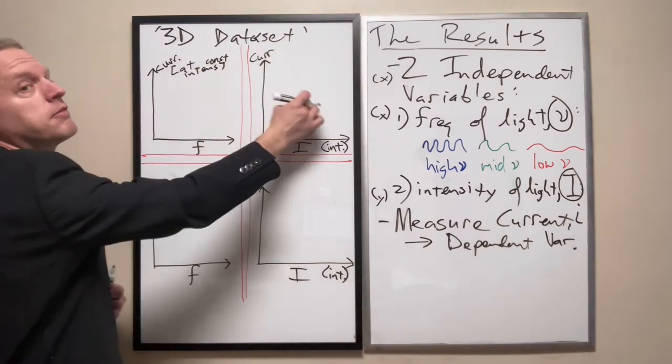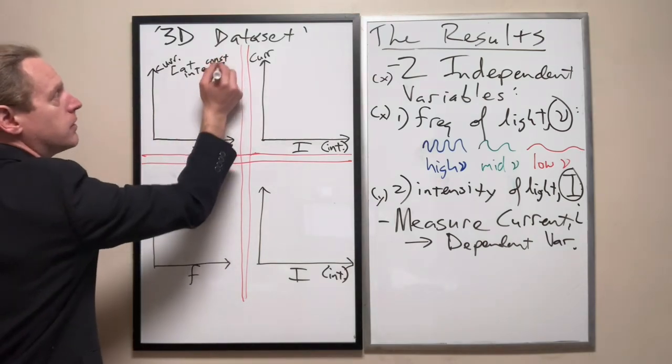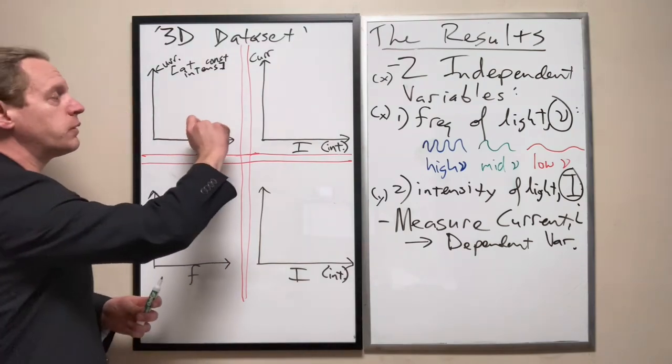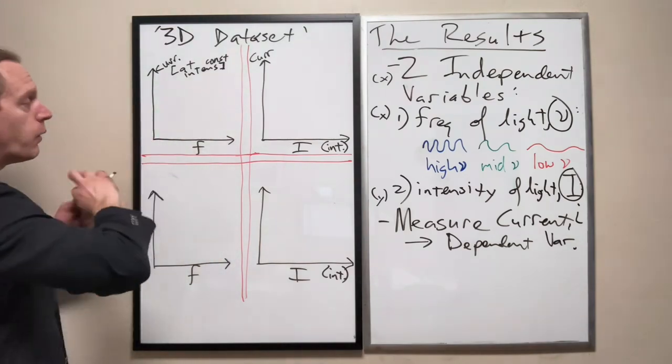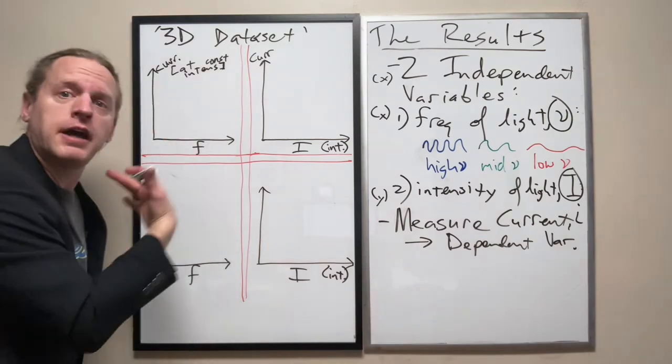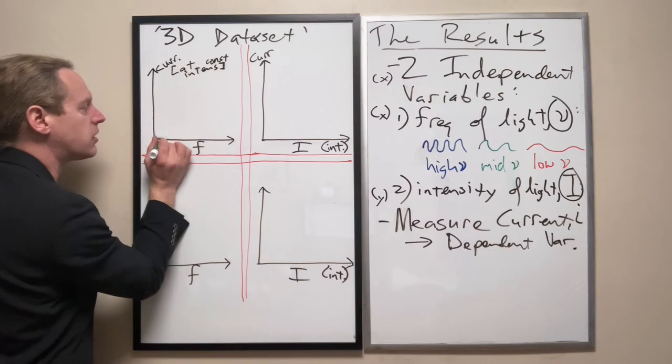What we find is that if we're doing this at a constant intensity, and by the way, this is important. So we measure the current at constant intensity. We're going to keep that at a constant frequency. You can only change one variable per time.